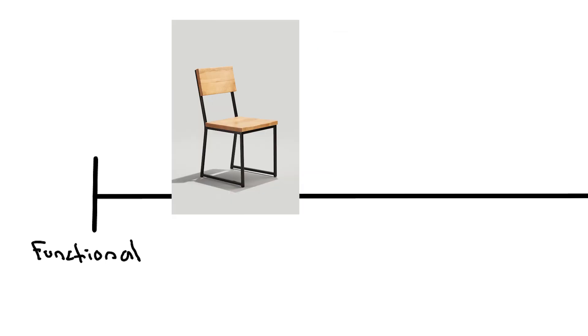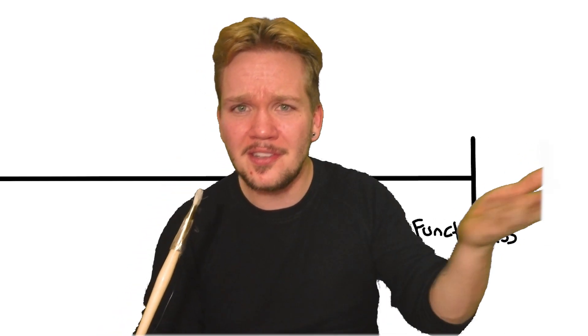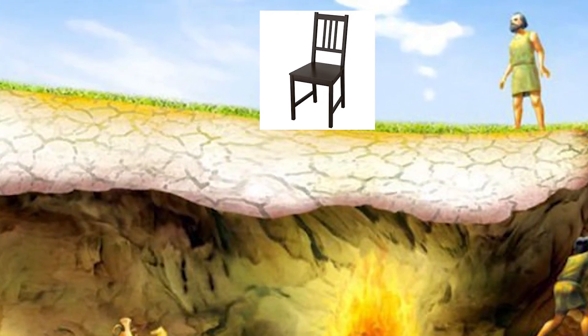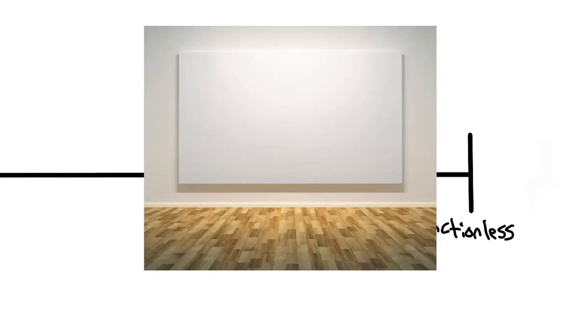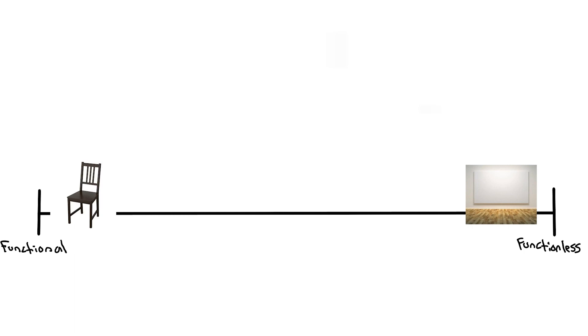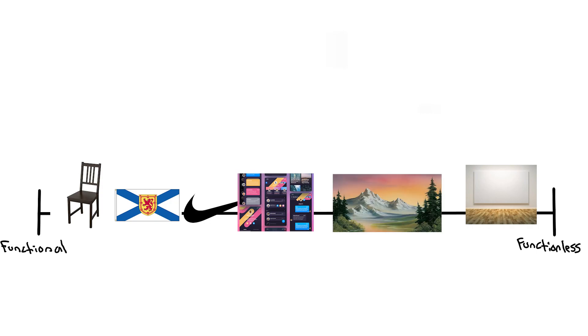On the spectrum, on one end, you have very functional human creations — the most functional of human creations. And on the other end, you have functionless human creations. I'm talking about the material realm here — materially functional. So on one end, let's say a chair — the platonic world of forms chair. And on the functionless end, you have something like a blank canvas painting. There's not even anything on it, not even a technical ability involved — something that we have championed before as art. All human creations can fall on the spectrum. And in between, you have flags, graphic design, user interfaces, landscape painting, public sculpture.